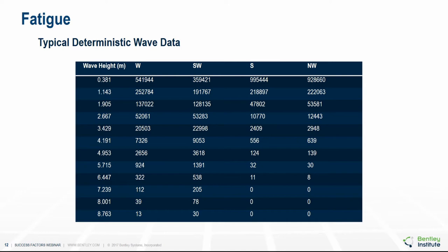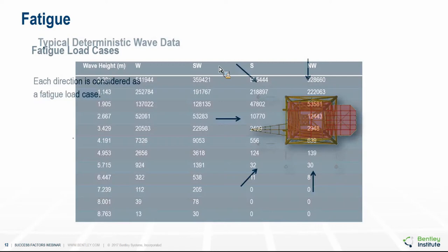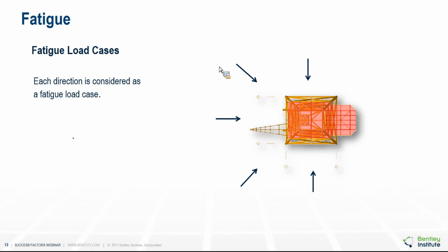A typical example of deterministic wave data comprises wave heights and the occurrence for each different direction — in this case four directions. In SACS, each direction is considered as a separate fatigue load case, so if you're looking at eight directions, SACS will consider this as eight fatigue load cases. You can run all directions in one analysis producing one common solution file, or run each direction separately producing multiple common solution files.